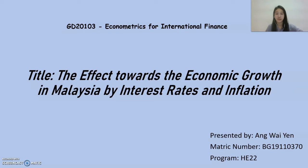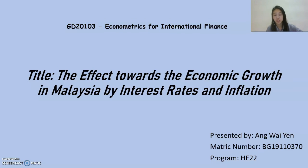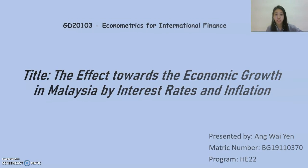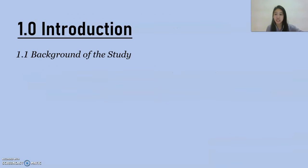Good day, everyone. My name is Ang Woyen and my matrix number is BG1911-0370. Today I am here to talk about my first part, which is introduction for our group assignment titled The Effects Towards the Economic Growth in Malaysia by Interest Rate and Inflation. Let's see the first part of this study, which is background of the study.